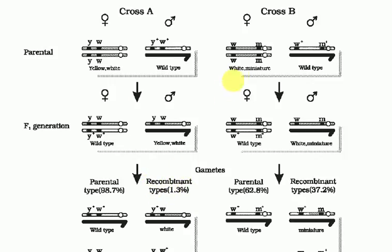In the second cross, linkage is lower because the genes w and m are far from each other. In the F1 generation, parental type individuals are only 62.8%, which is much less compared to Cross A. Therefore recombinant type individuals are 37.2%, which is very high compared to only 1.3% in Cross A — a huge difference.